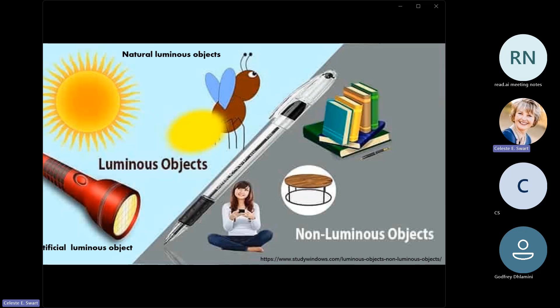Let's look at the difference between luminous and non-luminous objects. Natural luminous objects are things like the sun and the firefly — things that send out their own light. Artificial luminous objects will be like a torch or a candle. Non-luminous objects are things like a book, a pen, a table, a human body — anything that cannot emit its own light.